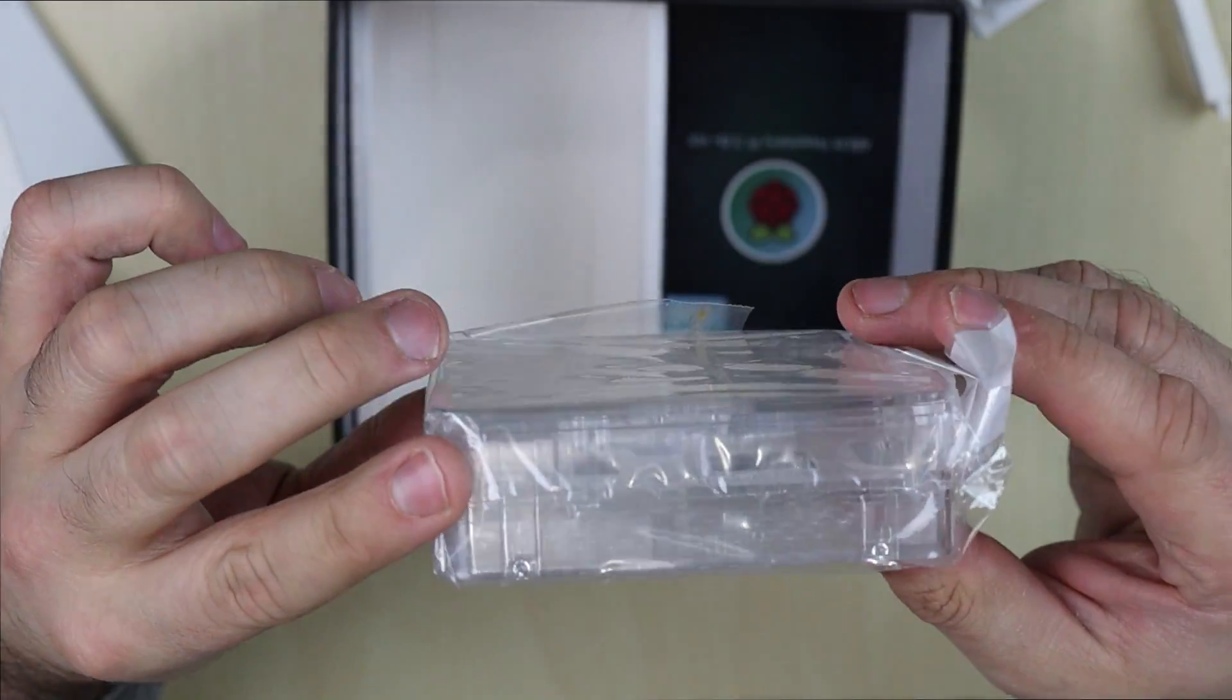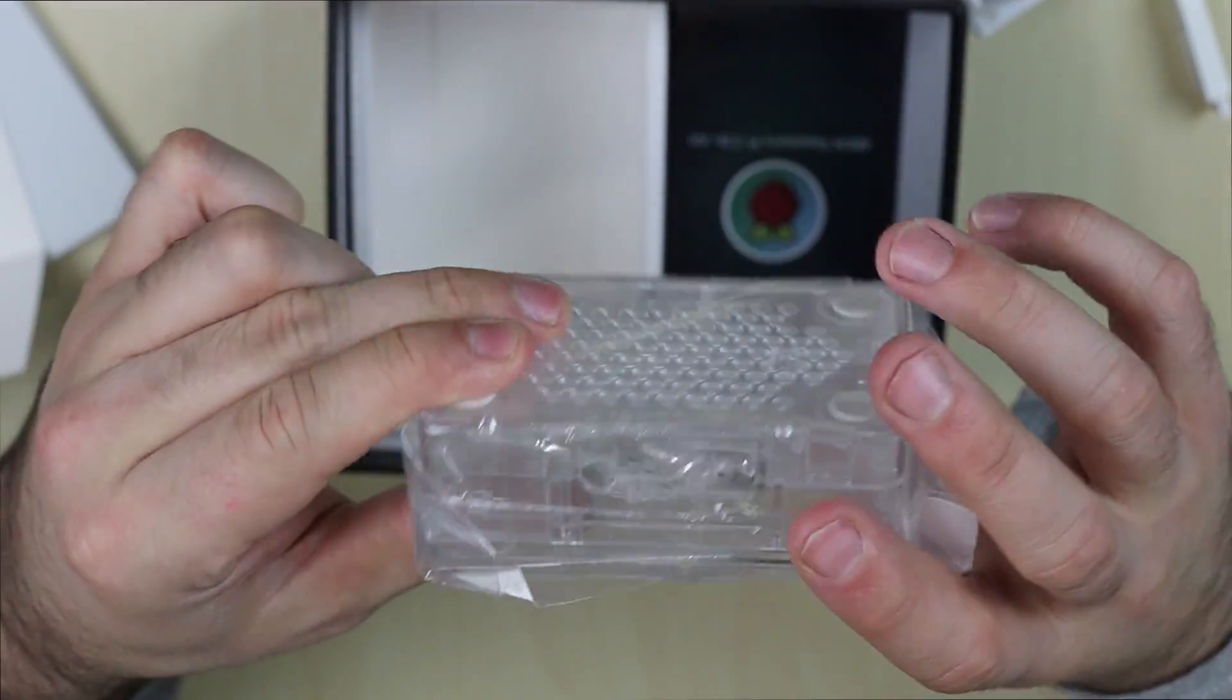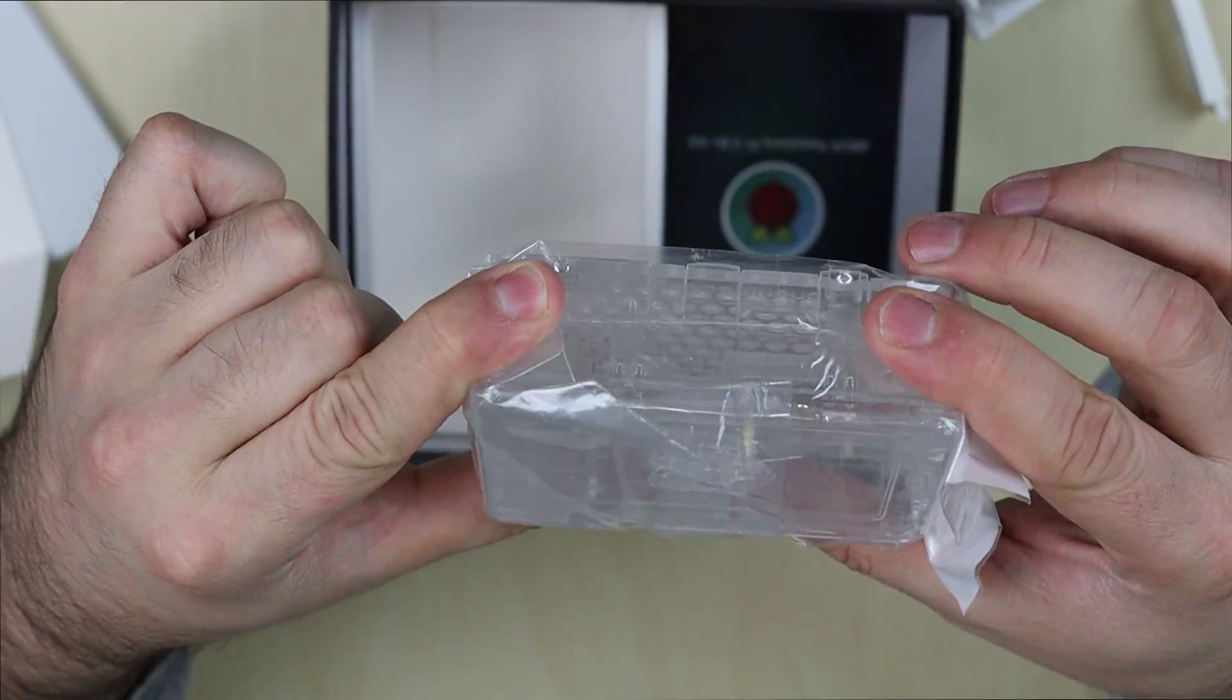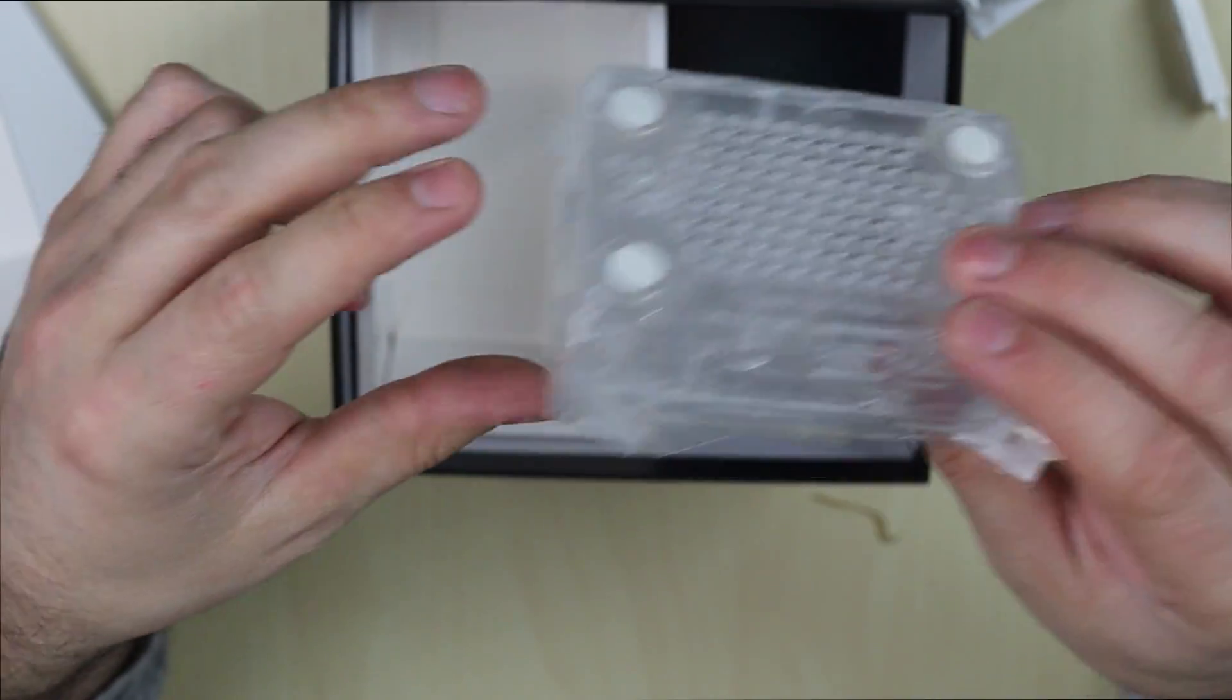It also comes with this Raspberry Pi 3 Model B Plus case. Pretty cool. Really thick. Really strong and sturdy. It's clear. And definitely love this case. I'm going to use this in my next project.